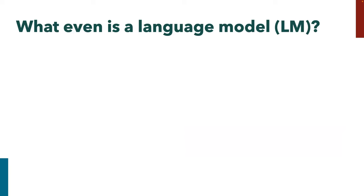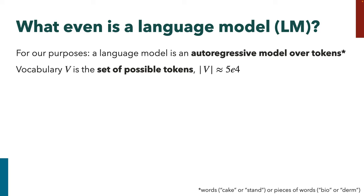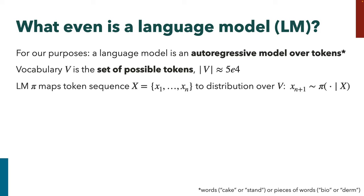The question is: what was between these two things, what was added? It really is this 'one weird trick,' which is RL from human feedback — and that's what we're going to talk about today. As a little bit of background so we're all on the same page: a language model, for our purposes, is just an autoregressive model over tokens. Tokens you can think of as words, sometimes subwords or word pieces, but basically it's an autoregressive model over words.